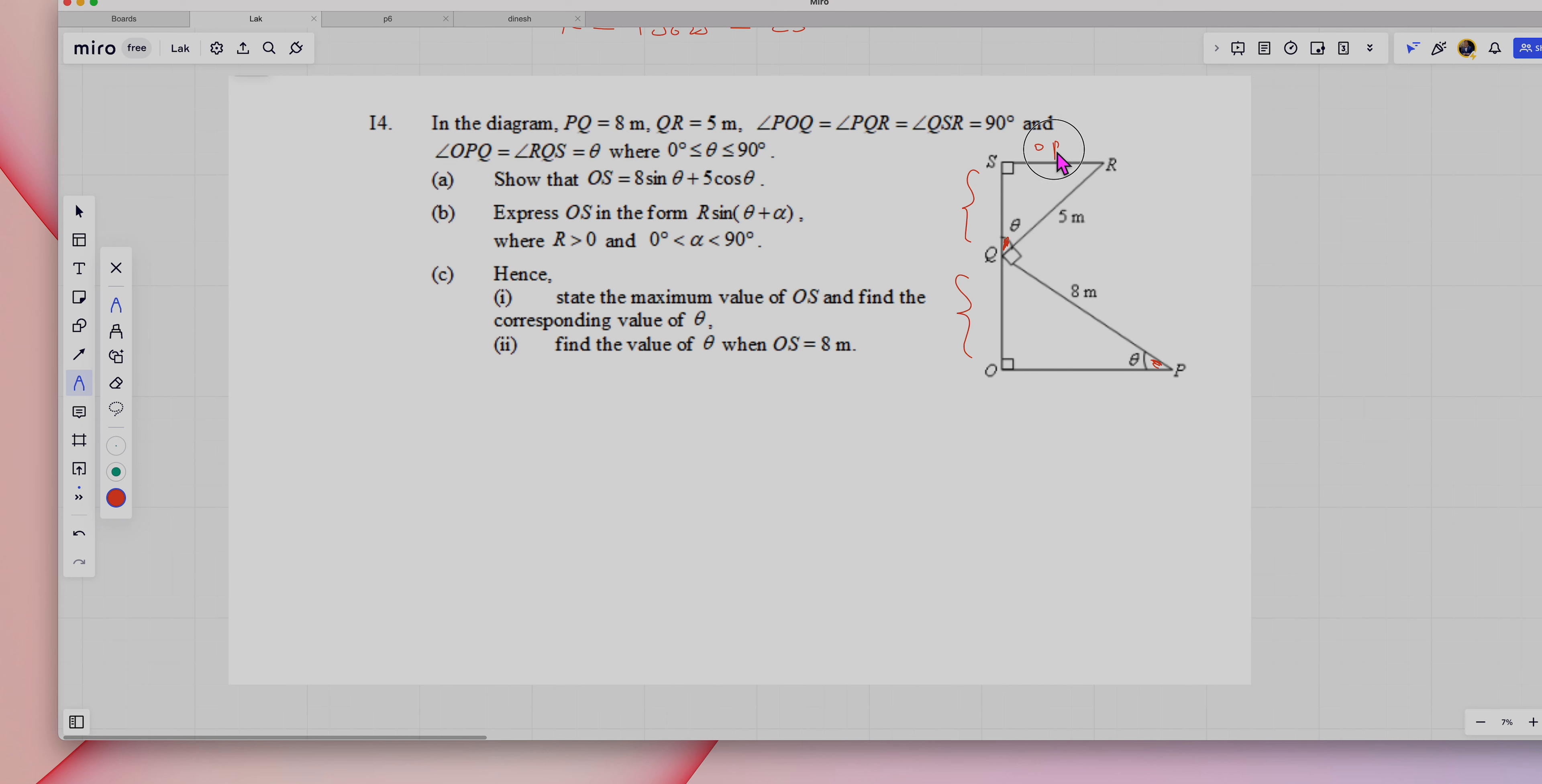This is the opposite, this is the adjacent, and this is the hypotenuse. Similarly, this is the opposite to theta, this is the adjacent, and this is the hypotenuse. So write down SOHCAHTOA. You need to find this, right? This is your adjacent, so adjacent is CAH. Cosine theta equals A, which is SQ, over H, which...